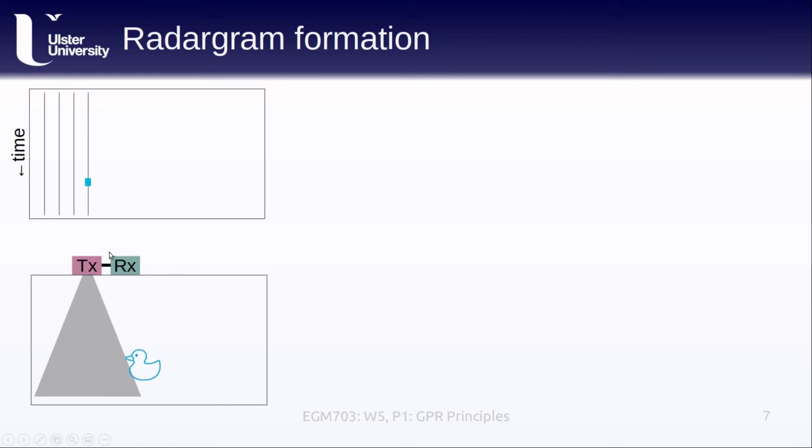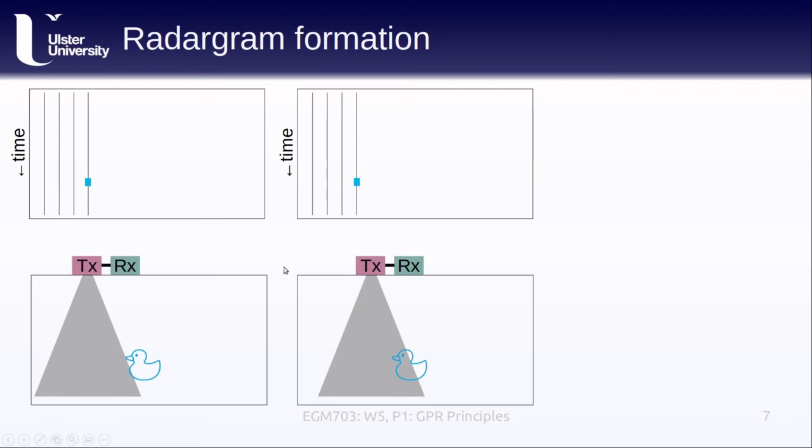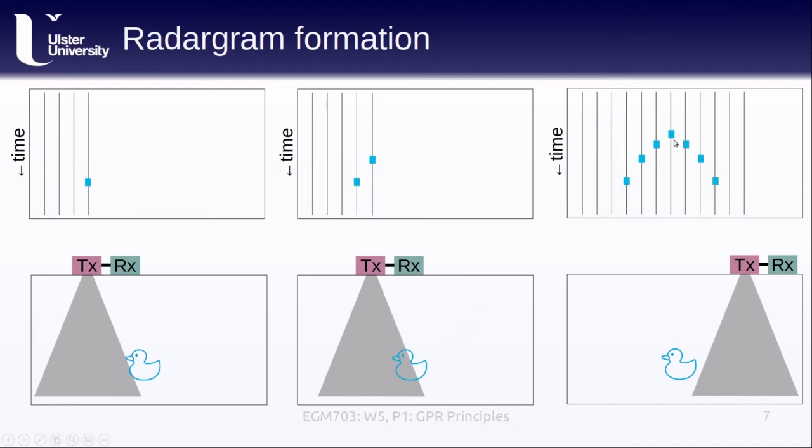If we move the array and send out another signal, notice how the apparent distance between the object and the antenna has changed. Instead of intersecting with the radar beam all the way down here, we're now seeing a reflection much higher up, more like about here. As we move our instrument array, this apparent depth is going to continue to change, even though the object itself does not move. So in the end, our radar image of this single object is going to trace out a shape like this.